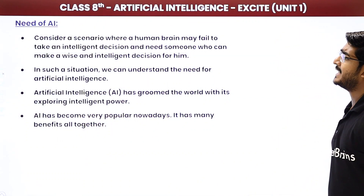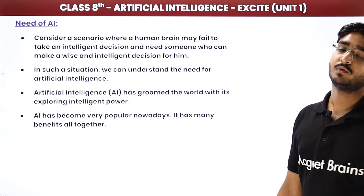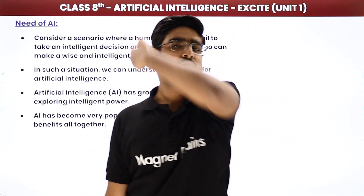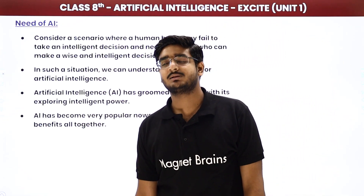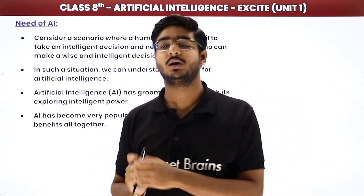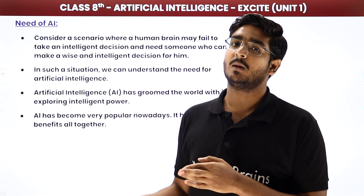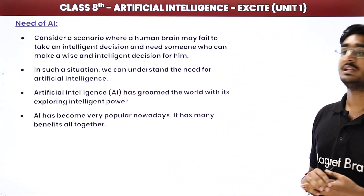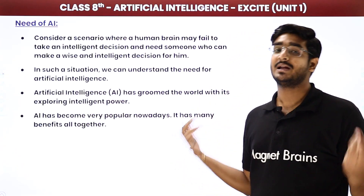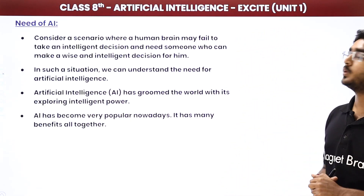Consider a scenario where a human brain may fail to take an intelligent decision and needs someone who can make a wise and intelligent decision for him. Think of a situation where the human brain cannot make a decision — it is stuck in a dilemma, caught in emotions — and making that decision is very important. In such a situation, you need something other than a human that can make the decision. In such a situation, we can understand the need for artificial intelligence.